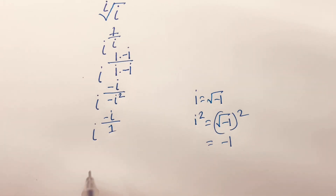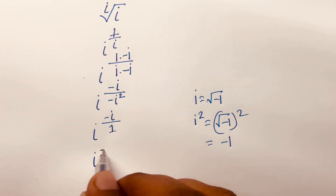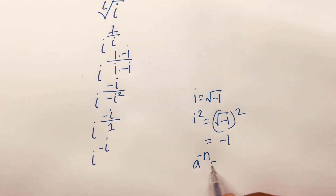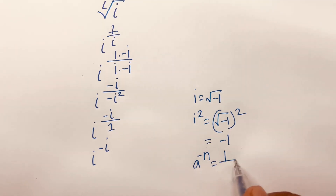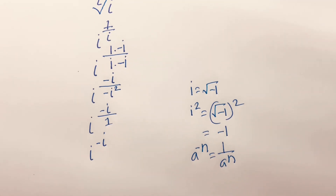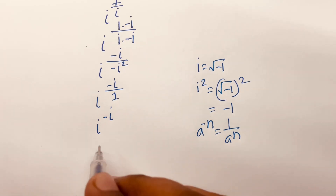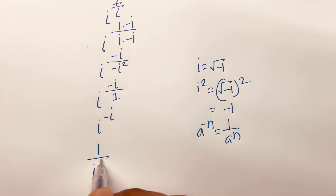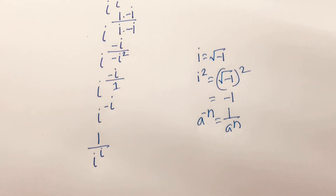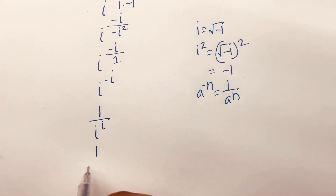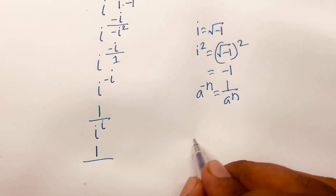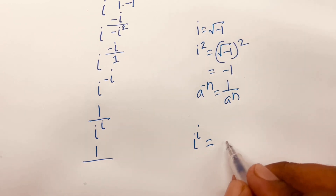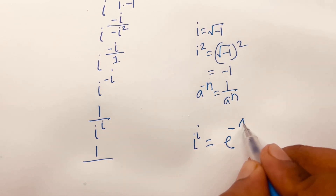Then I can say here is i to the power minus i. We know that i to the power minus n is equal to 1 over i to the power n. According to this rule, I can say here is 1 over i to the power i. Then it will be 1 over i to the power i is equal to e to the power minus pi by 2.